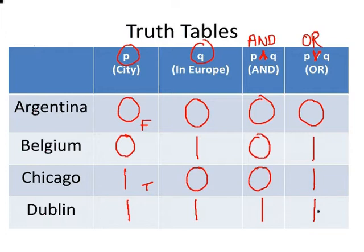That is how we fill in a truth table. The ordering for P and Q was picked deliberately to be consistent with how you would construct truth tables later on — I won't get into that now, but it was deliberately chosen to be consistent with what you'll see later.